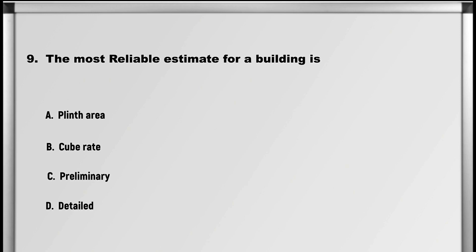Next up is question number 9: The most reliable estimate for a building is: A. Plinth area, B. Cube rate, C. Preliminary, D. Detailed. Answer: D. Detailed.